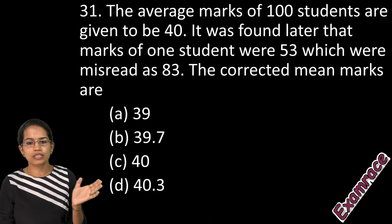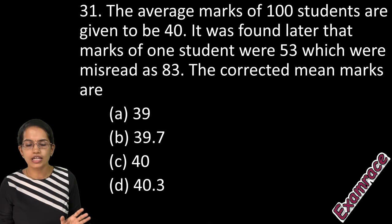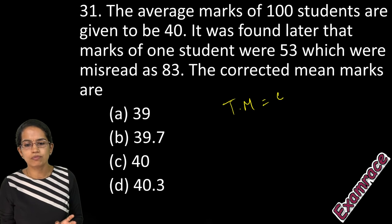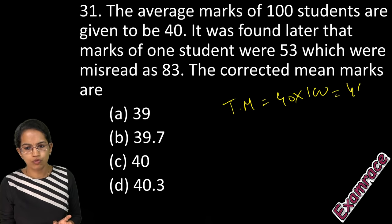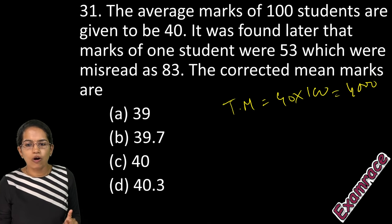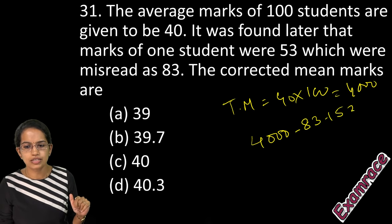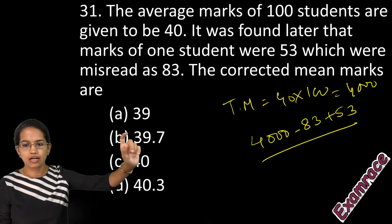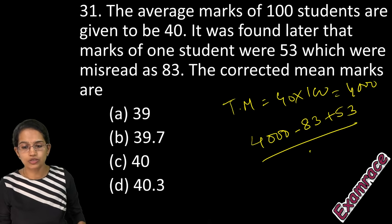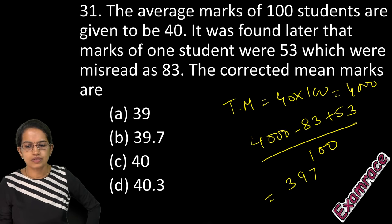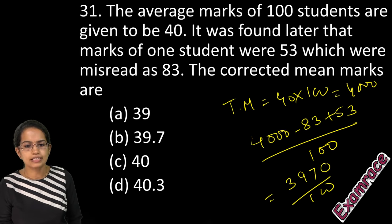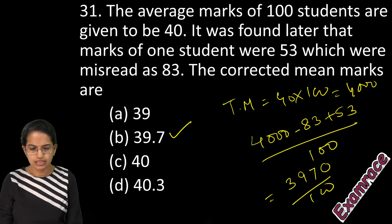The next is a simple question: 100 students with mean marks of 40, so total marks = 40 × 100 = 4000. One mark was incorrectly entered as 83 instead of 53. Corrected total = 4000 − 83 + 53 = 3970. New mean = 3970 / 100 = 39.7. So 39.7 is the right answer.